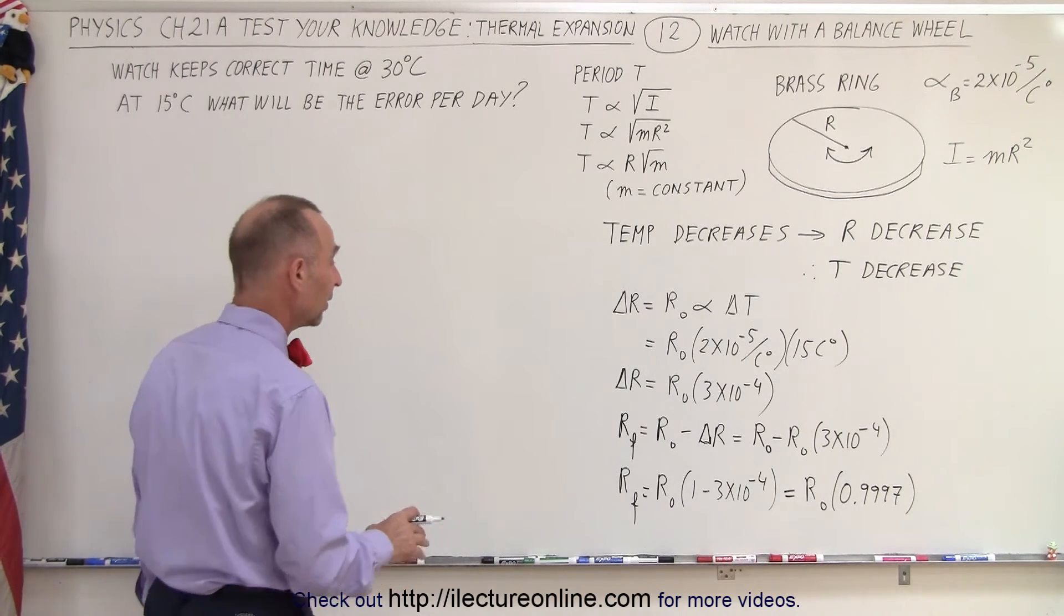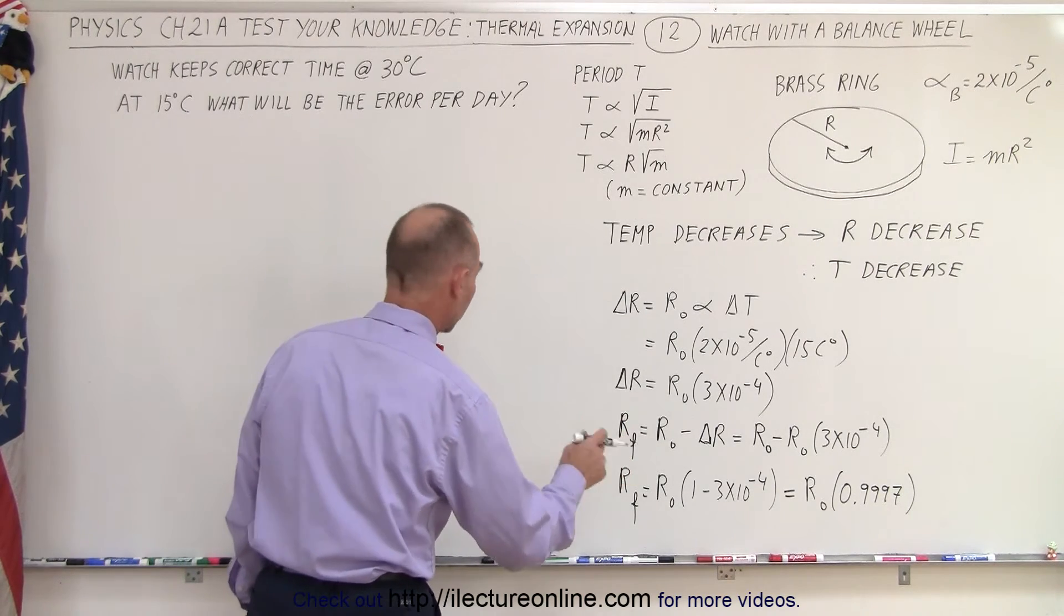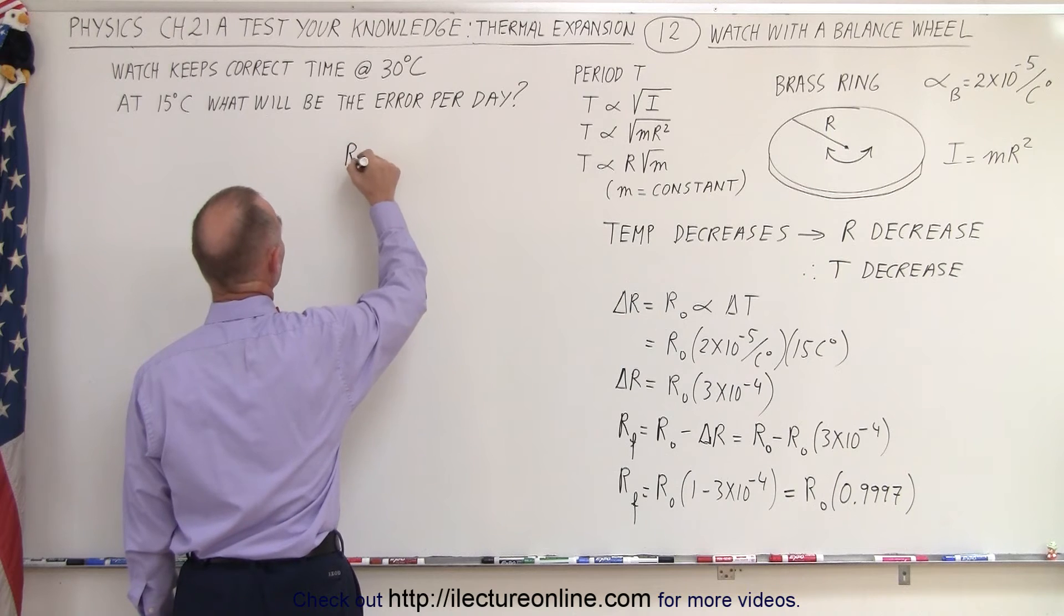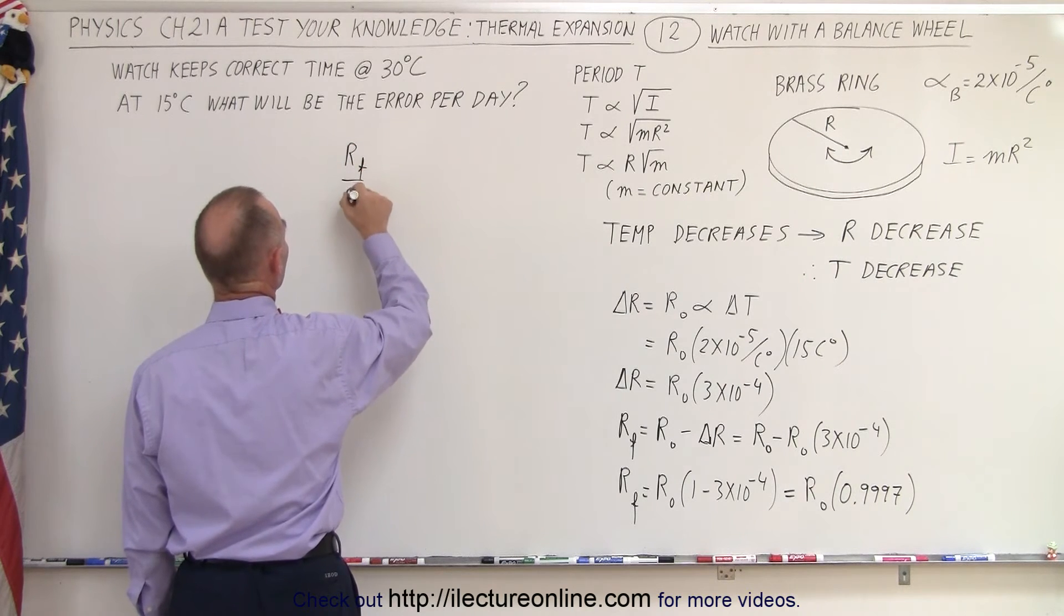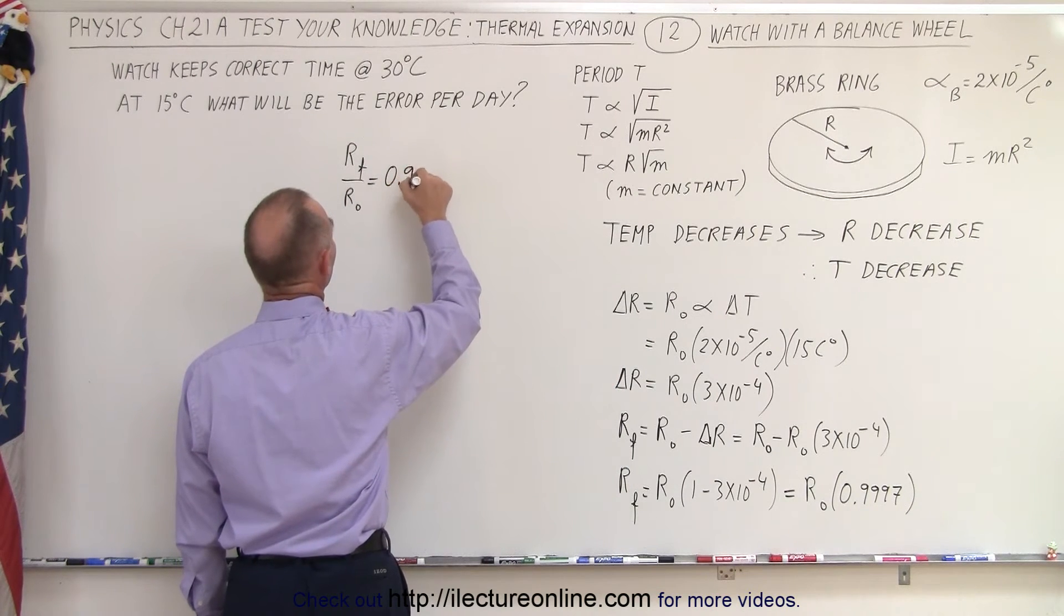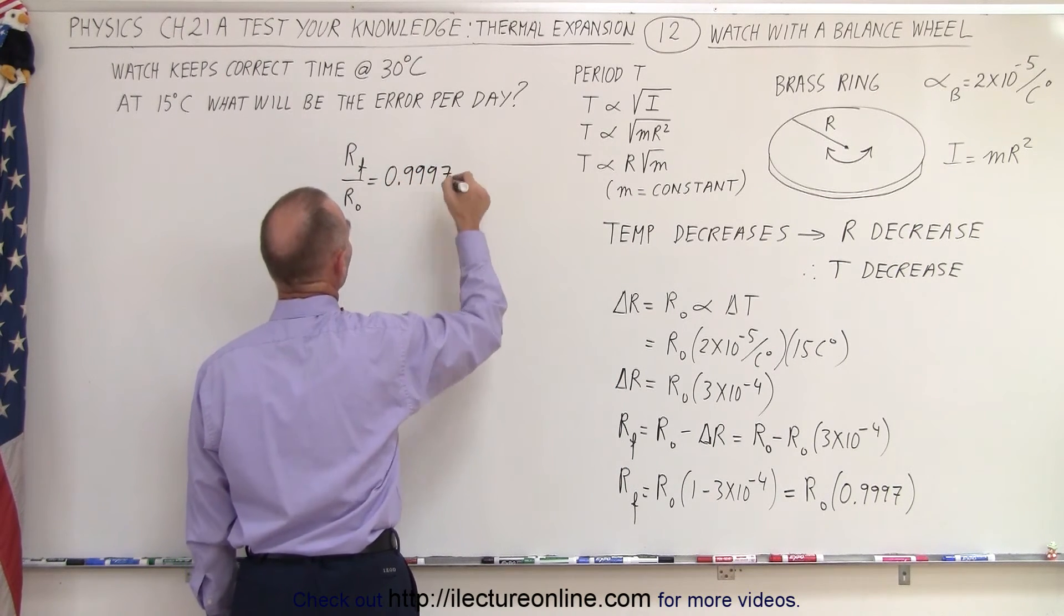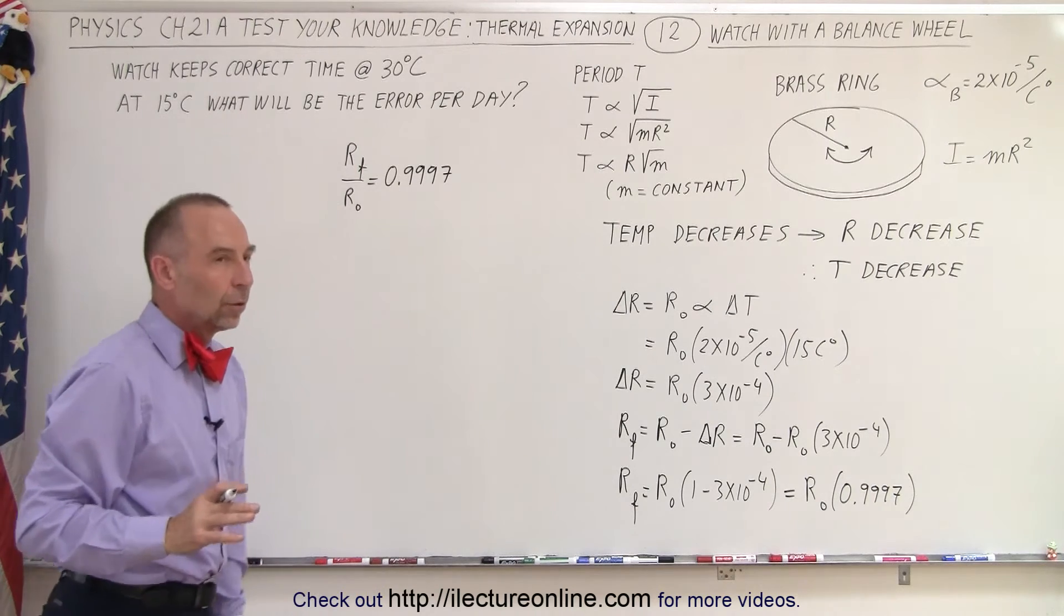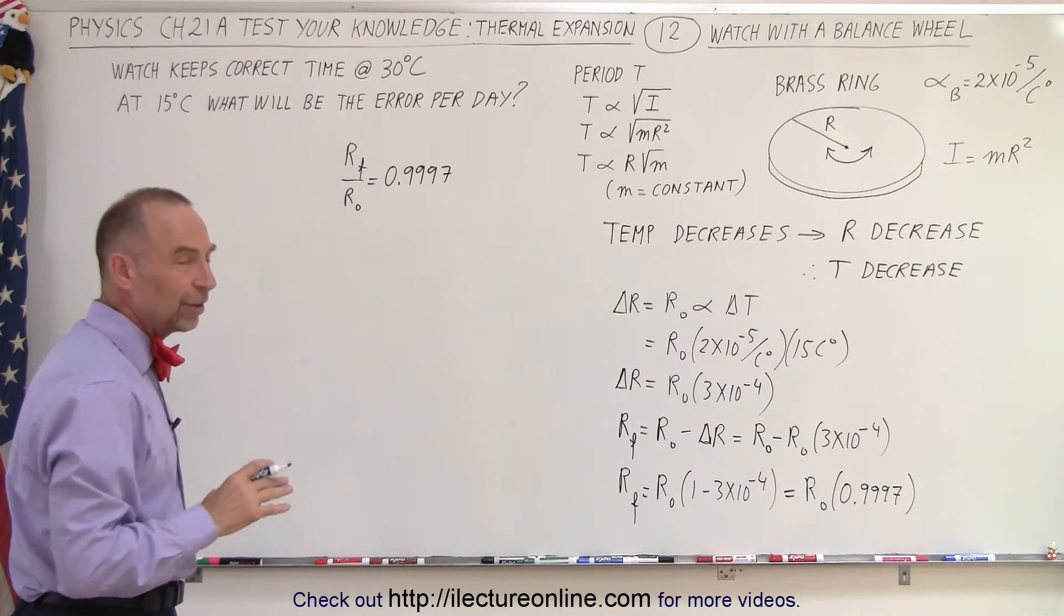Okay, now that we have that, we now have a relationship between R final divided by R initial is equal to 0.9997. So let's see how much of a difference that makes.